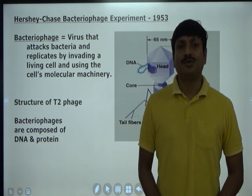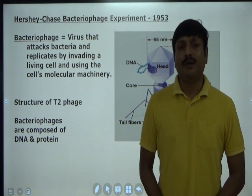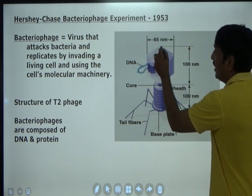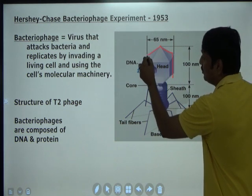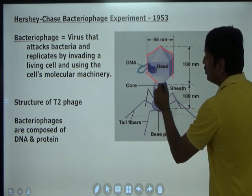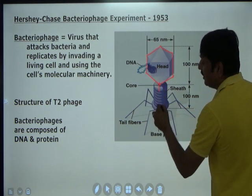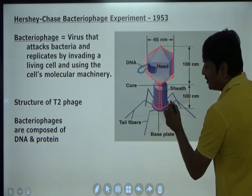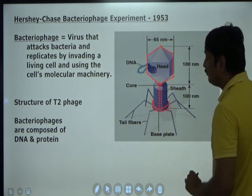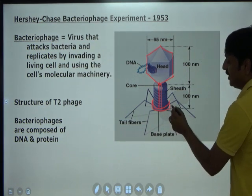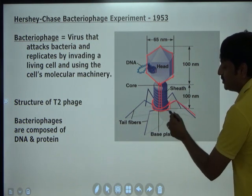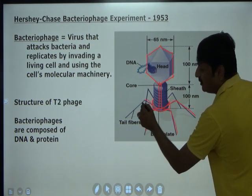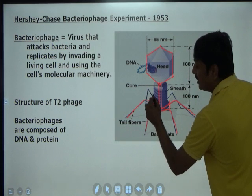Let us study the structure of bacteriophage. Bacteriophage has a head, which is icosahedral in shape. Then there is a tail, and there is a base plate. From the base plate, the tail fibers arise.